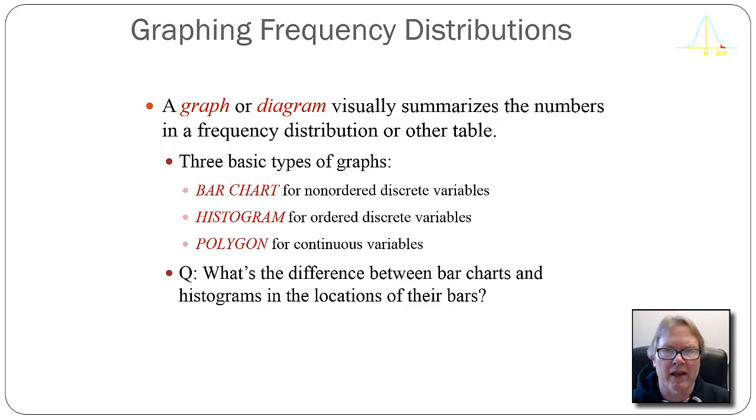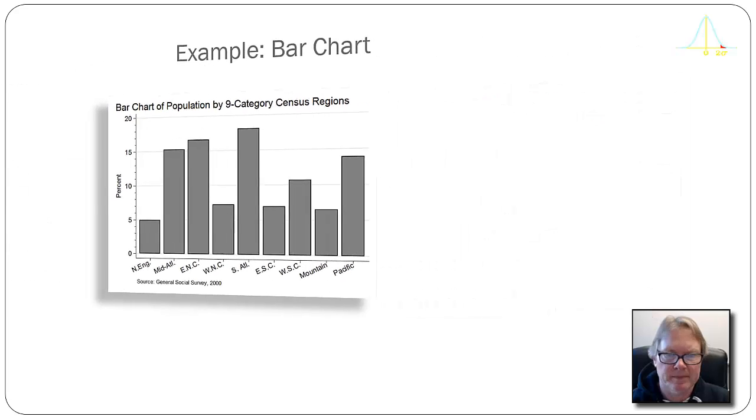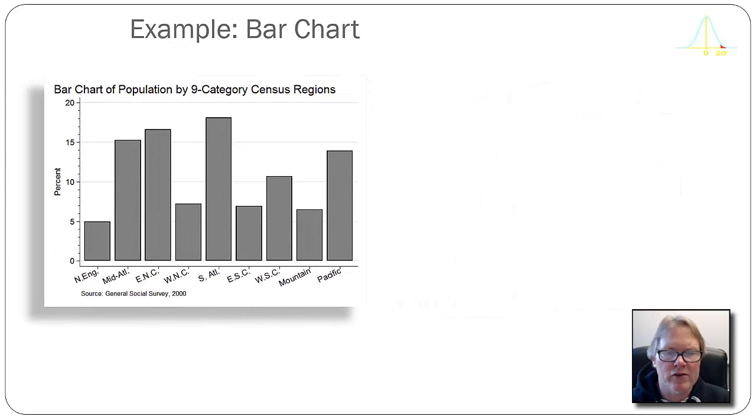Let's go ahead and take a look at a distribution. Here I've used the General Social Survey in year 2000 to show a frequency distribution of the percentage of people living in the nine different regions in the United States.